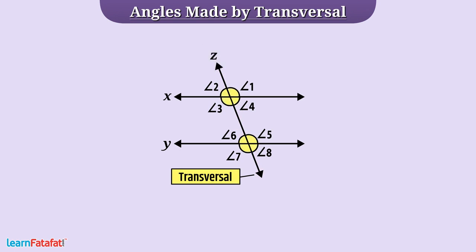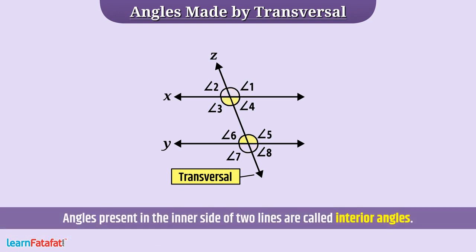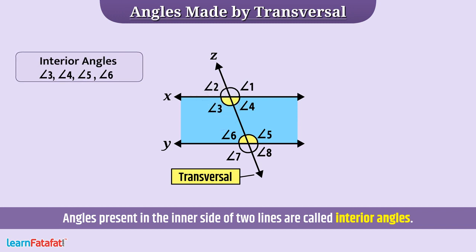Transversal Z forms eight different angles with these lines. Let's discuss them one by one. Angles formed by the transversal that are present on the inner side of the two lines are called interior angles. Here, angle 3, angle 4, angle 5, and angle 6 are interior angles.